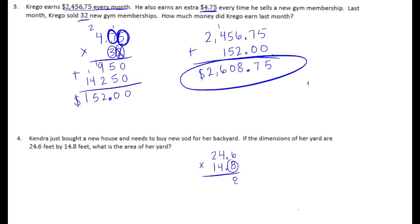Starting with the 8. 8 times 6 is 48, carry the 4. 8 times 4 is 32 plus 4 is 36. Carry the 3. 8 times 2 is 19. Done with the 8. On to the 4. Put our 0 down. 4 times 6 is 24, carry the 2. 4 times 4 is 16 plus 2 is 18. Carry the 1. 4 times 2 is 8 plus 1 is 9.